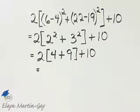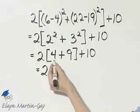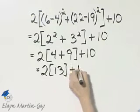Let's see what we have now. 4 plus 9. We'll finish within the set of brackets. That's 4 plus 9, or 13, plus 10.